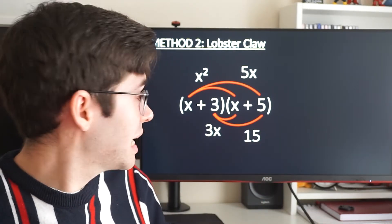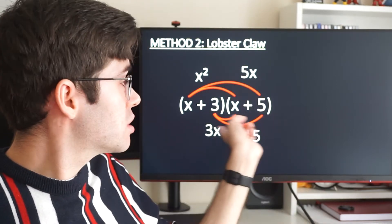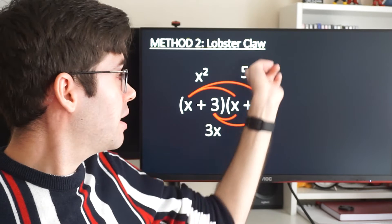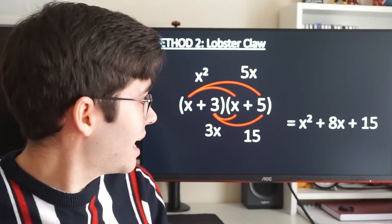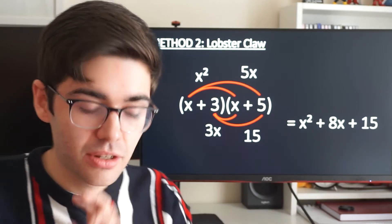And then, same as we did in the last one, we're just going to add all of those terms together. So x squared plus 5x plus 3x plus 15. But we can combine these to get 8x. So that is the same answer we got the last time: x squared plus 8x plus 15.